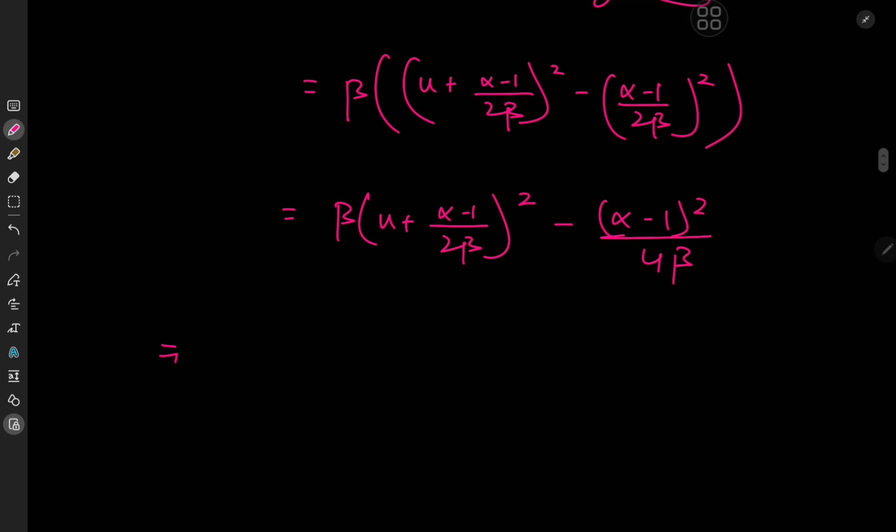And all of this implies that the target integral i is now the integral from negative to positive infinity of what exactly? We have e to the negative negative, so that's alpha minus 1 divided by alpha minus 1 squared divided by 4b, that is, minus beta times u plus alpha minus 1 divided by 2b squared du.